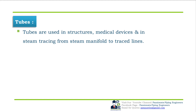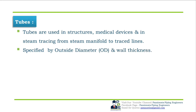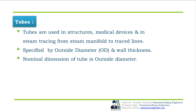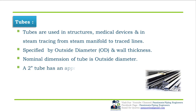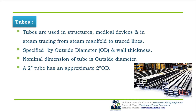Tubes are used in structures, medical devices, and steam tracing. They are used for fittings for steam manifolds to trace lines. Tubes are specified by outside diameter (OD) and wall thickness. The nominal dimension of a tube is its OD — a 2 inch tube has an approximate 2 inch OD.